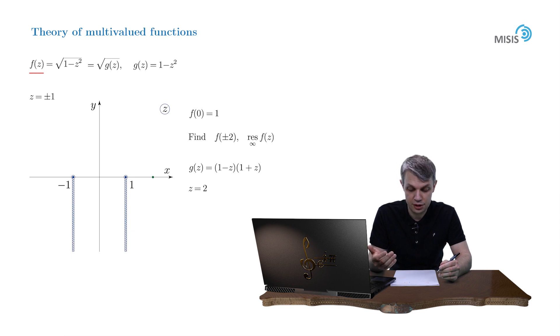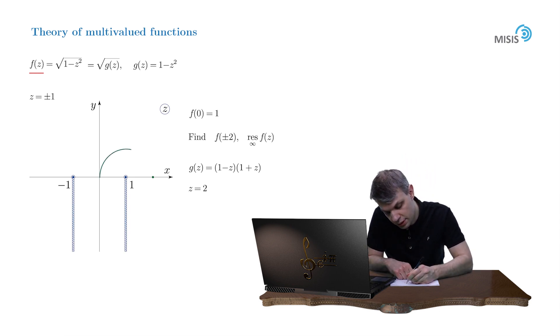The reference point in our situation is 0, the destination point is 2. And the contour would be, say, an upper semicircle.